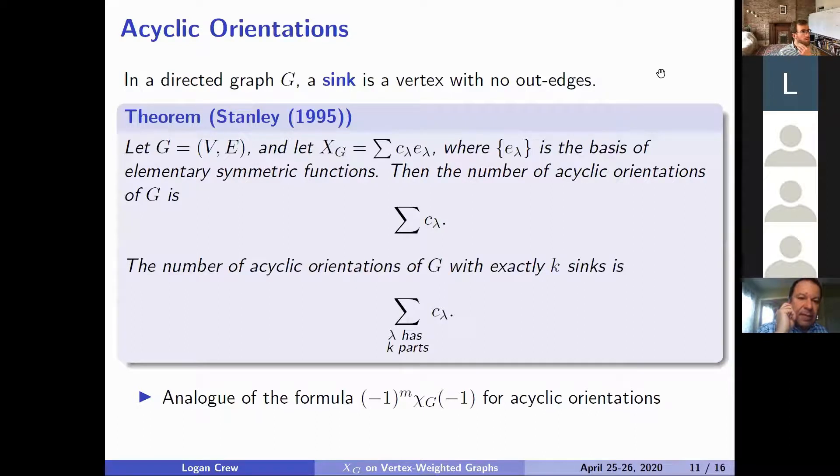Richard Stanley originally introduced the chromatic symmetric function and one of his nicest results arguably is a result on acyclic orientations of a graph. So we assign an orientation to a graph by assigning a direction to each edge. A sink is then going to be any vertex with no out edges. An isolated vertex then is also a sink.